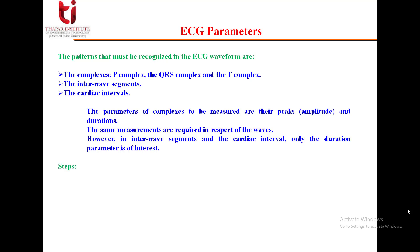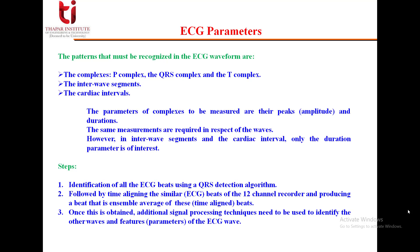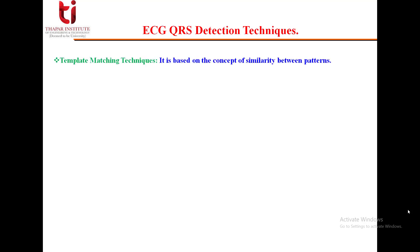The different steps for measuring these parameters are: first, identification of all ECG beats using a QRS detection algorithm, followed by time-aligning the similar ECG beats of the 12-channel recorder, and then producing a beat that is a symbol average of these time-aligned beats. Once this is obtained, additional signal processing techniques are used to identify the other waves and parameters of the ECG. We will study some QRS detection techniques in this lecture and coming lectures.